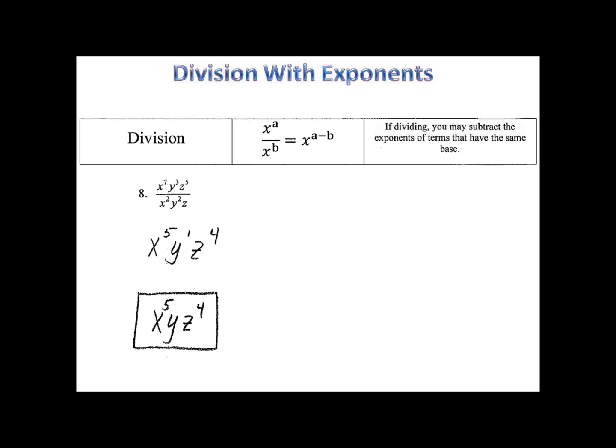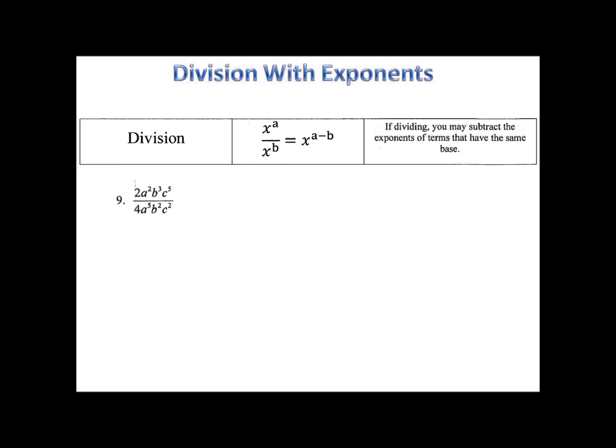How about number 9? Why don't you give this one a try? Pause the video and then come on back. Let's see how you did. We begin by simplifying the 4 and the 2. The 2 becomes a 1 and the 4 becomes a 2 in the denominator. Now we subtract a's. 2 minus 5 is negative 3. a to the negative 3. Let's look at the b's. 3 minus 2 is 1, b to the first.